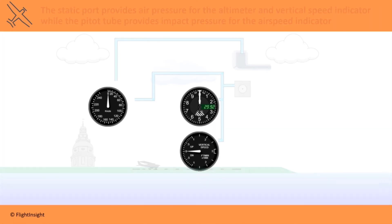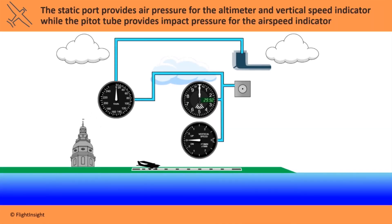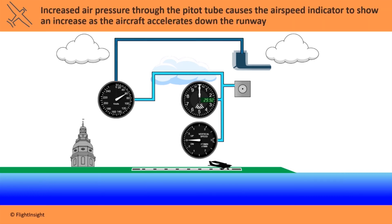The static port on the side of the fuselage provides air pressure for the altimeter and vertical speed indicator. The airspeed indicator also reads air pressure from the static port, as well as impact pressure from the pitot tube pointed forward on the aircraft. As an aircraft increases airspeed, impact pressure in the pitot tube increases while static pressure remains the same. The larger difference is shown as an increase on the airspeed indicator.